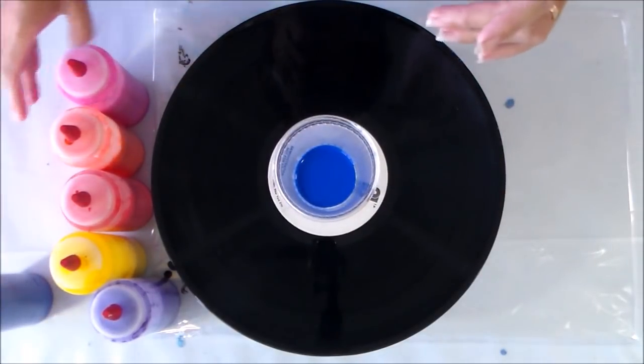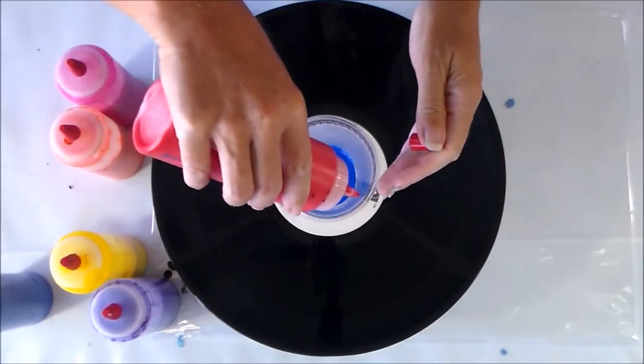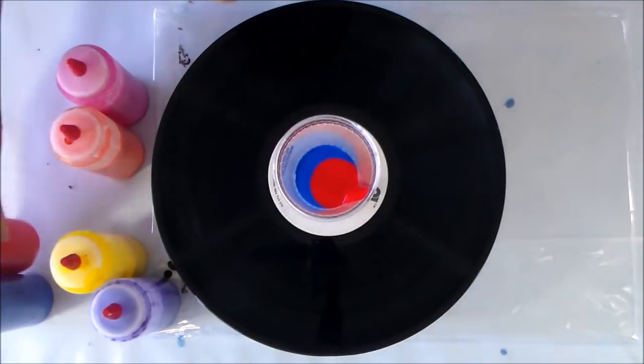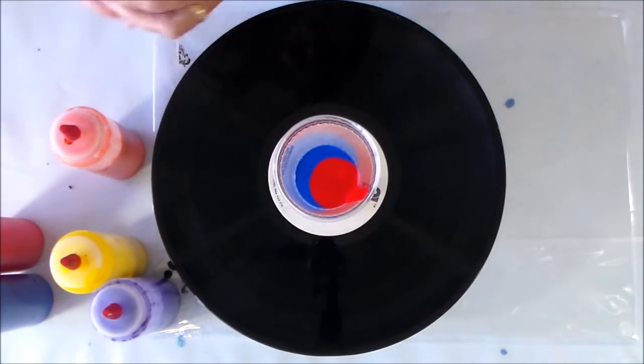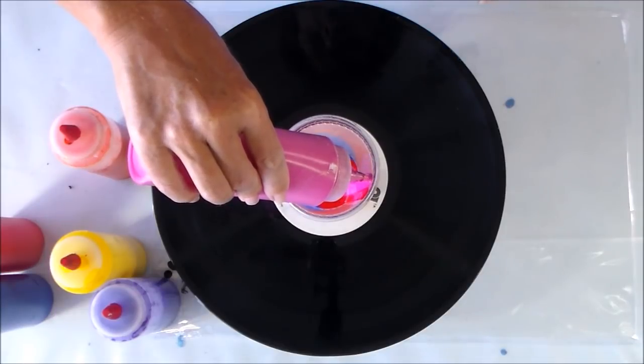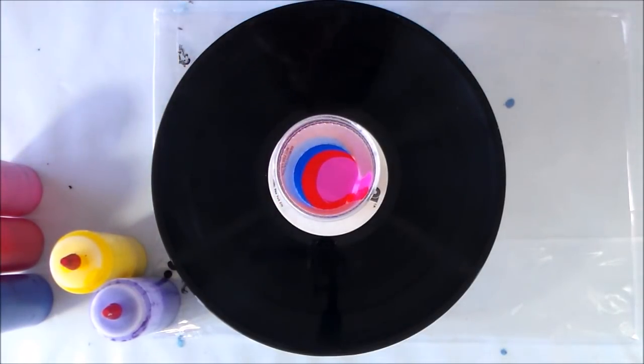I'm gonna pour these pretty carefully into my cup just so that they're in layers rather than mixing together. I've got a little bit of blue, so I'm gonna start with some red and I'm just going to add them down the side of the cup.